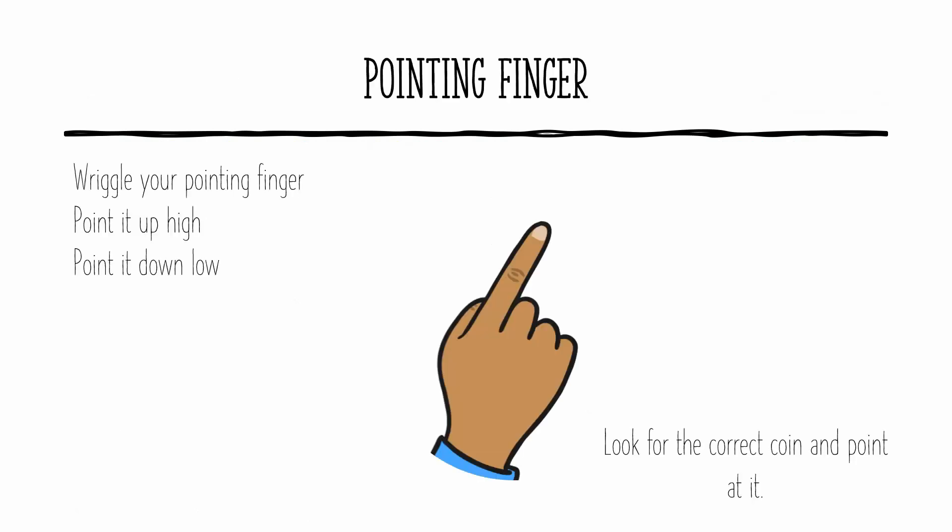We're going to have another go at playing your pointing finger because it was so much fun. Can you wiggle your pointing finger? Wiggle, wiggle, wiggle. Can you point it up high? Can you point it down low? We are going to use our eyes to look for the correct coin and then our pointing finger to point at the correct coin. Here goes.